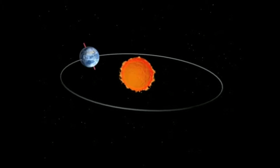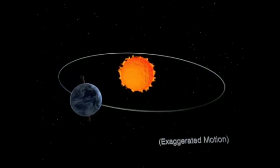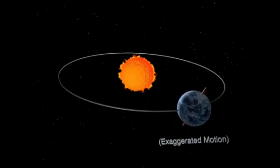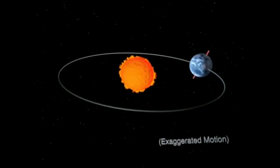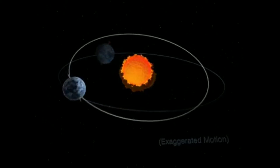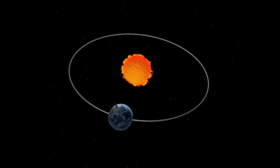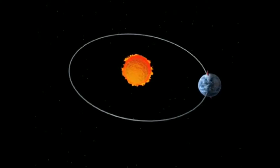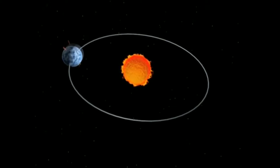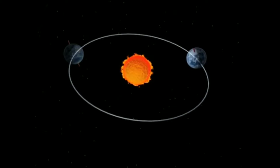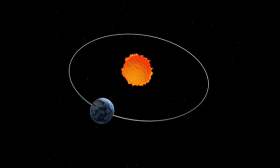Earth's rotation is slowing slightly with time, so a day was shorter in the past. This is due to the tidal effects the Moon has on Earth's rotation. Atomic clocks show that a modern day is longer by about 1.7 milliseconds than a century ago, slowly increasing the rate at which UTC is adjusted by leap seconds.